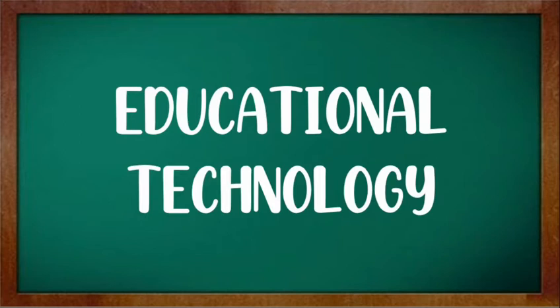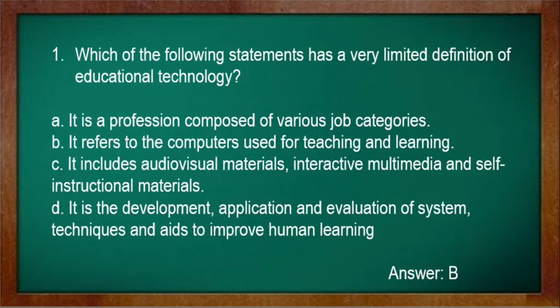Educational Technology Part 1. Number 1: Which of the following statements has a very limited definition of educational technology? A. It is a profession composed of various job categories. B. It refers to the computers used for teaching and learning. C. It includes audiovisual materials, interactive multimedia and self-instructional materials. D. It is the development, application and evaluation of system, techniques and aids to improve human learning. Answer: B.